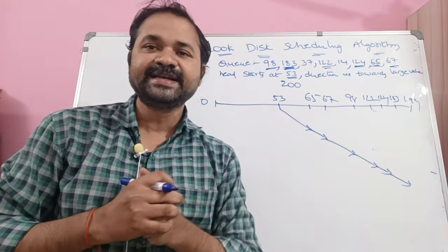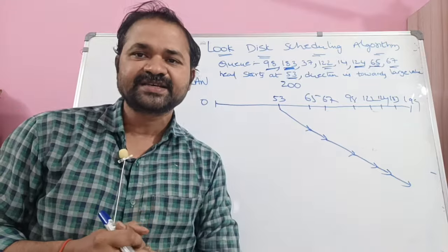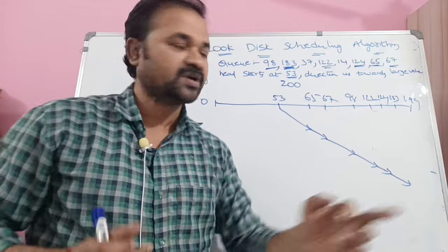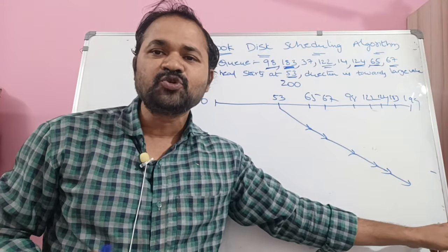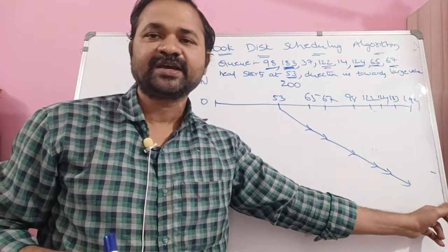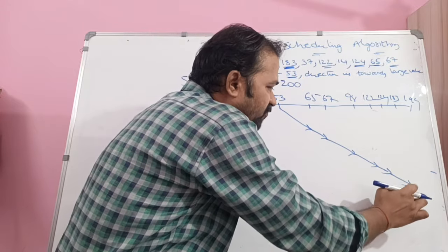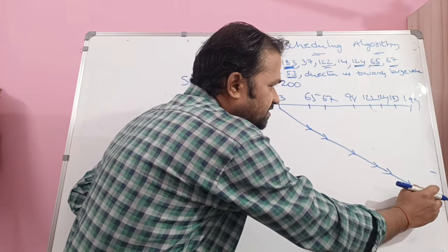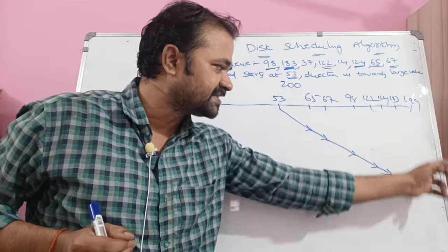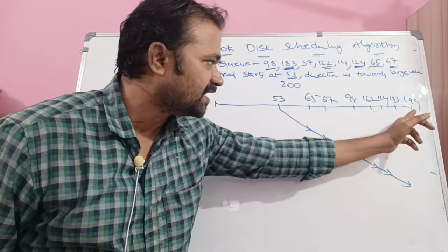The LOOK disk scheduling algorithm is similar to the SCAN disk scheduling algorithm. The only difference is that in SCAN, we have to handle the final cylinder request also — cylinder 199 in this case. But in the LOOK disk scheduling algorithm, there is no need to process the final cylinder. We only handle the last actual request, which here is 183.